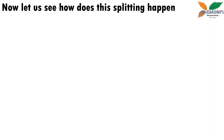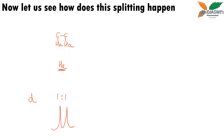Now how does splitting happen? The peak of HA splits into two (doublet, 1:1 intensity) because it has HB on the adjacent side. HB can either spin in the direction of the external magnetic field or against it, generating two effective fields for HA, and therefore the peak of HA splits into a doublet.